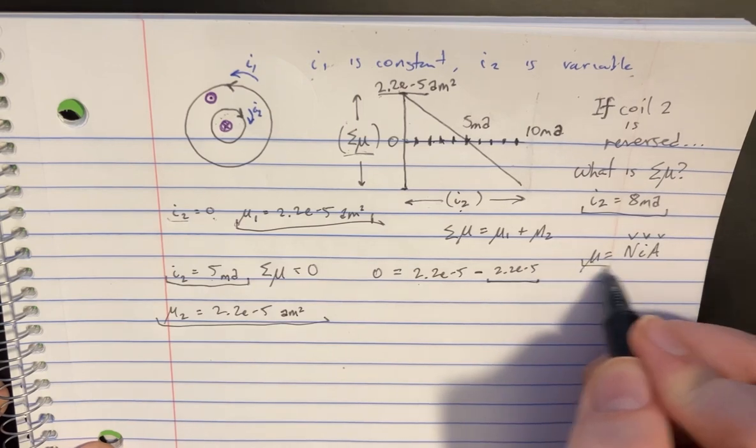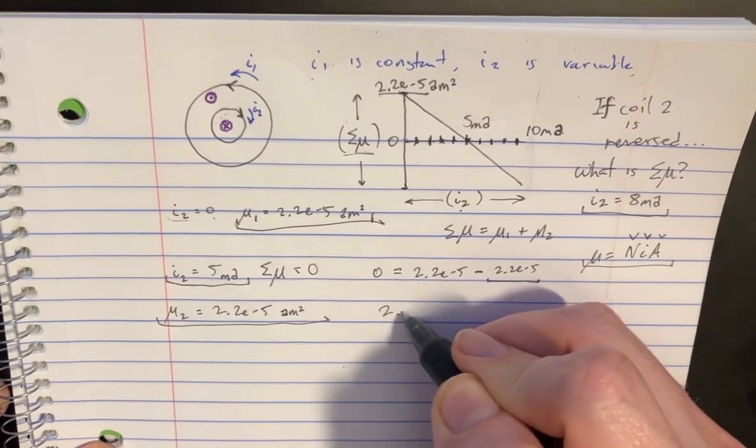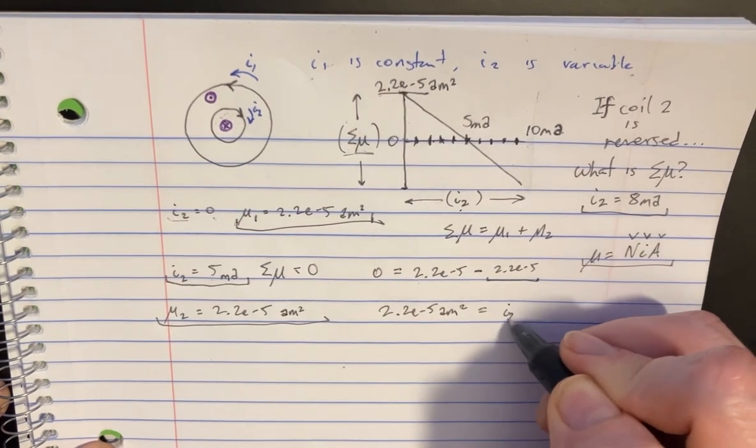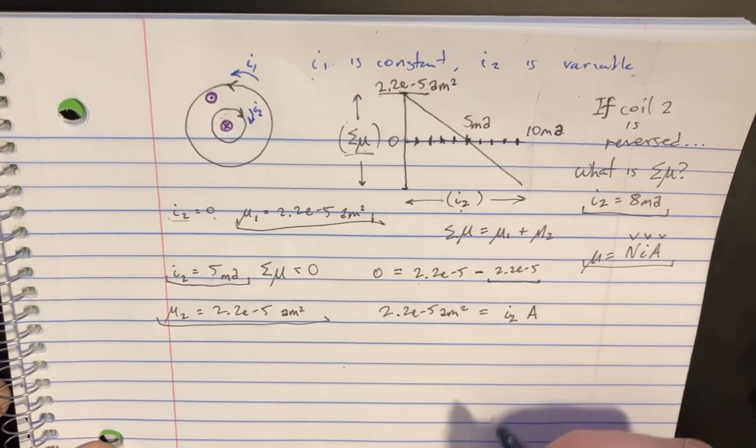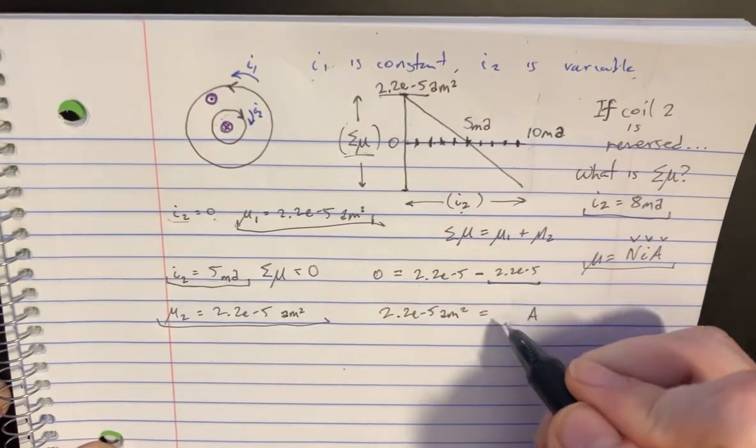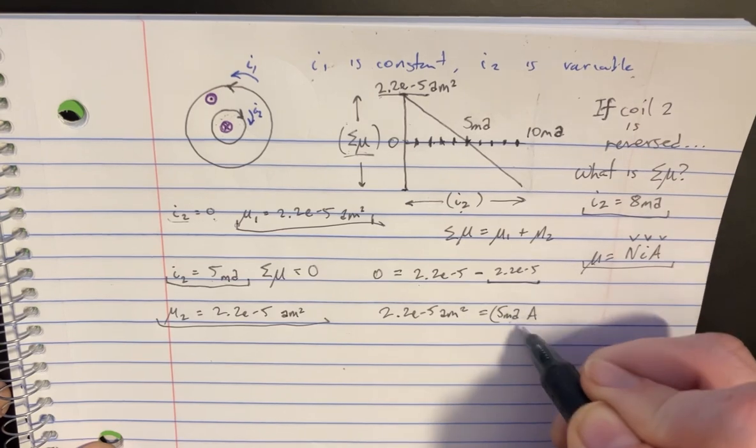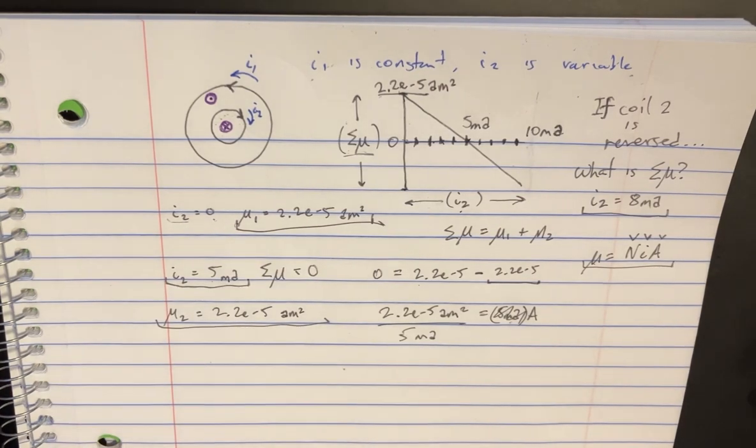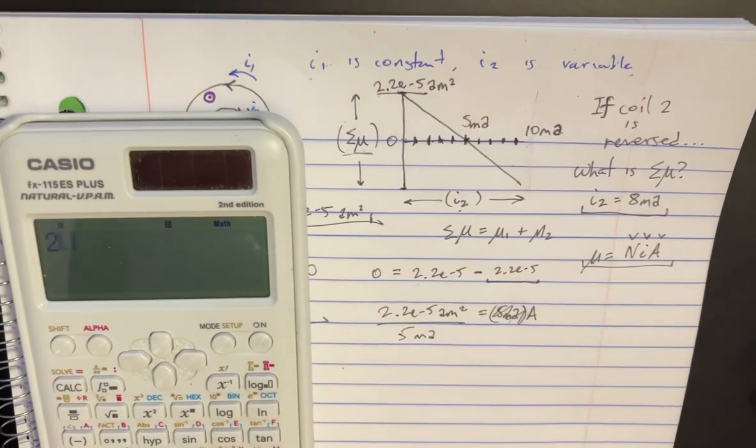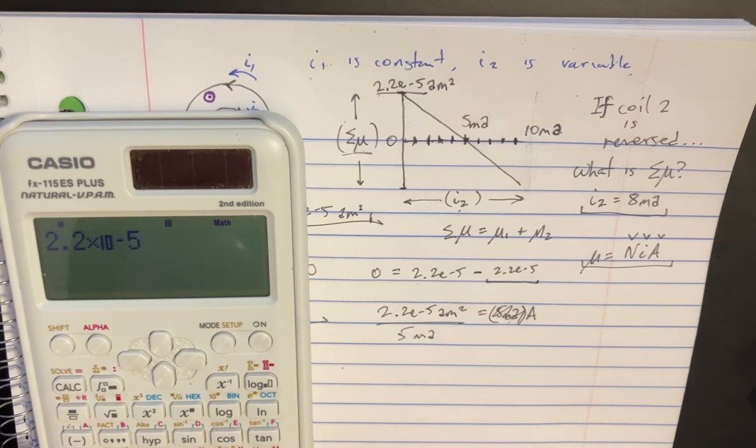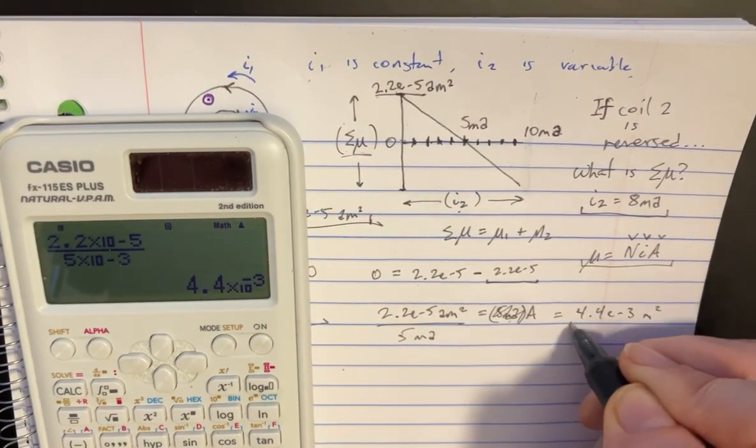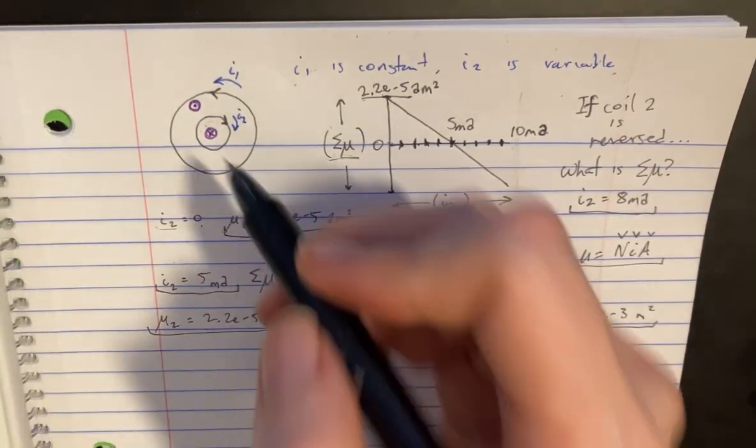Now we can use this equation, saying that 2.2 e to negative five is equal to N, which is one, times I2, which would be that, times the area. And since we know that I2 is actually the five milliamps, we can divide that by this side here, then we'll find the area. So 2.2 negative five divided by five negative three. We get the area is equal to 4.4 e to negative third meter squared. And that's going to be for this little thing.